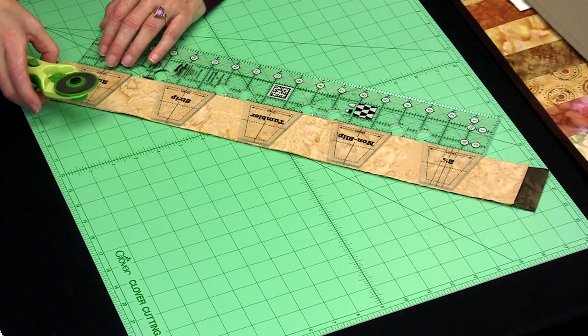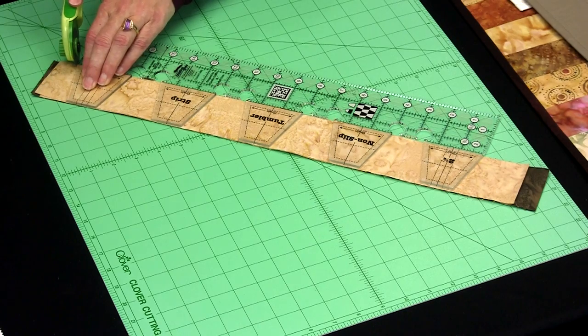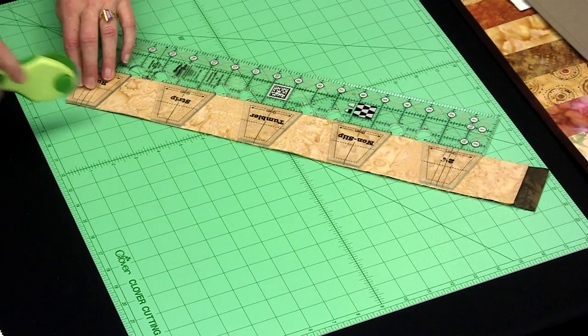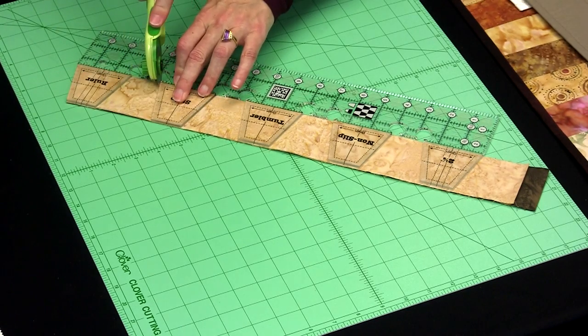And any more than 4, I think I would probably have more of a tendency to run into the ruler. So here we're going to cut our first, dance over, cut our second, dance back.